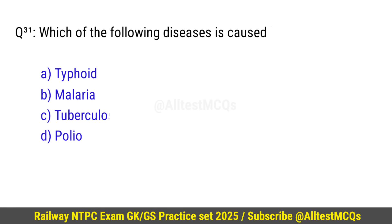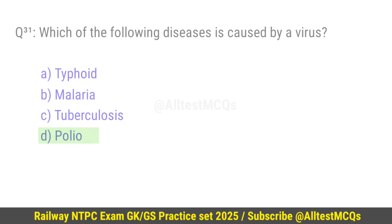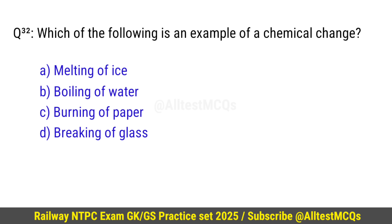Question number 31: Which of the following diseases is caused by a virus? Correct option is D — Polio. Question number 32: Which of the following is an example of a chemical change? Right option is C — Burning of paper.